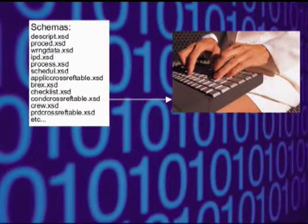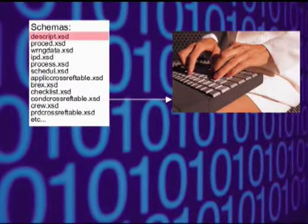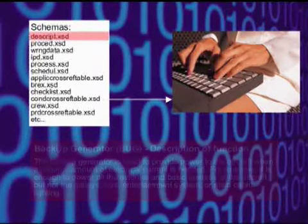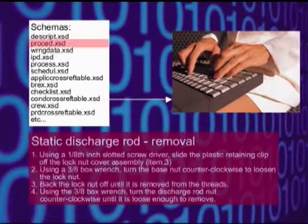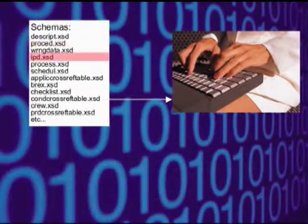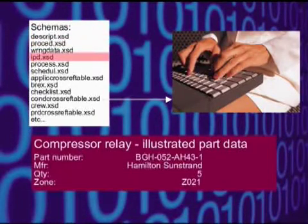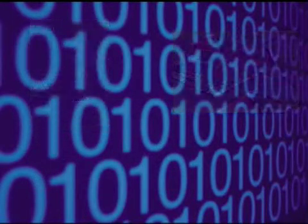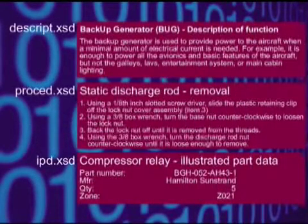The rest of the specification addresses methods of authoring content using the predefined schemas and how to format the output for various publications. Each schema addresses a specific information type. For example, the descript.xsd schema is intended to hold descriptive data. The proced.xsd schema is intended to support procedural data. The IPD.xsd schema is for illustrated part data. There are many other schemas designed specifically for other information types in various publications.